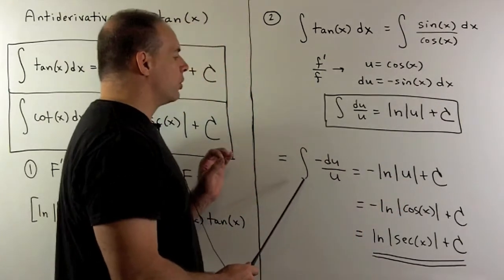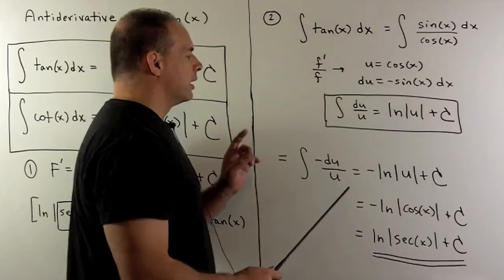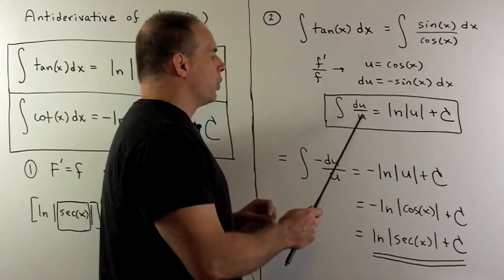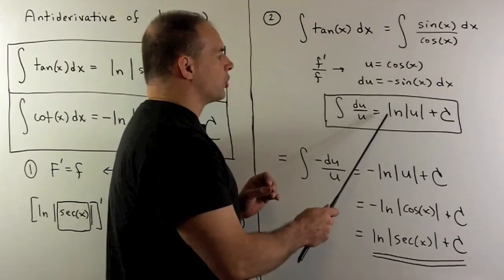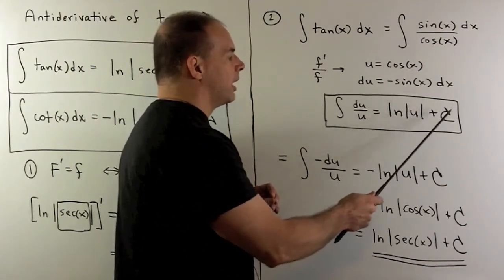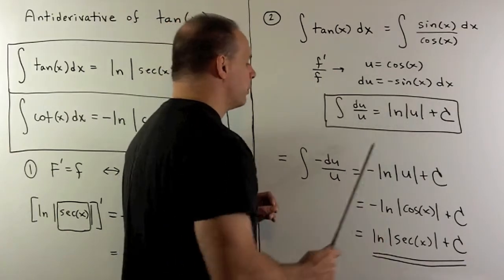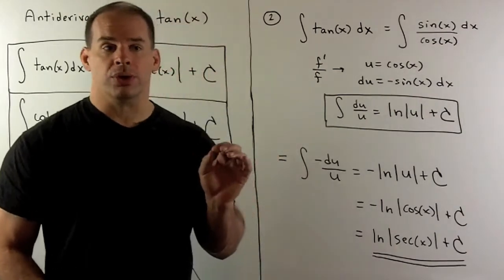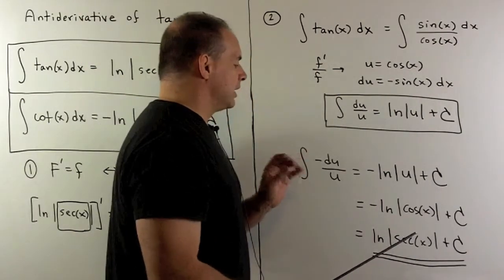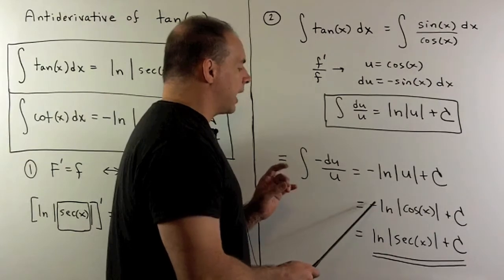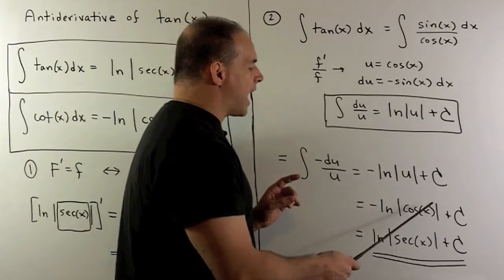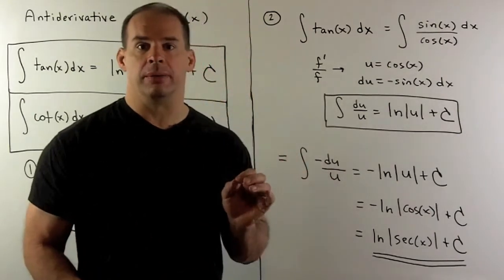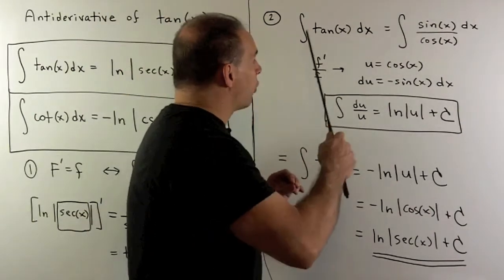We're going to let u be equal to cosine of x. du is equal to minus sine of x dx. Then when I substitute, we have the indefinite integral of minus du over u. Key point here: we've been working with the indefinite integral of du over u being equal to natural log of the absolute value of u plus a constant. So we have this, but with a minus sign. Our u is equal to cosine of x, and to get rid of this minus sign, I can move it to the inside of natural log as an exponent of minus 1. So we're going to have 1 over cosine, which is equal to secant. So that's how we derive our formula.